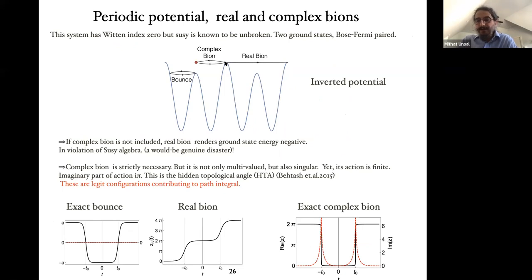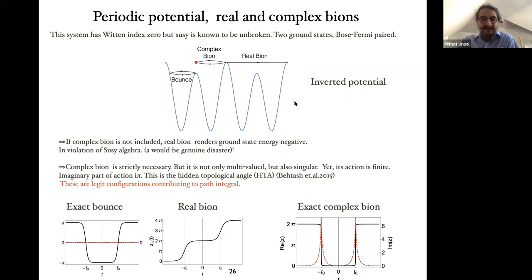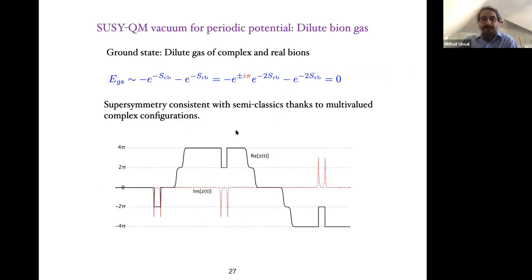In the periodic potential there is a real bion solution going from one hilltop to another, and also a complex bion solution. The contribution of these two differs by a phase factor of π. In this system supersymmetry is unbroken with two degenerate ground states — index is zero, but supersymmetry is unbroken. If the complex solution were not included, the real bion would render the ground state energy negative, contradicting the SUSY algebra. Including both, you obtain zero as a sum of the two contributions.